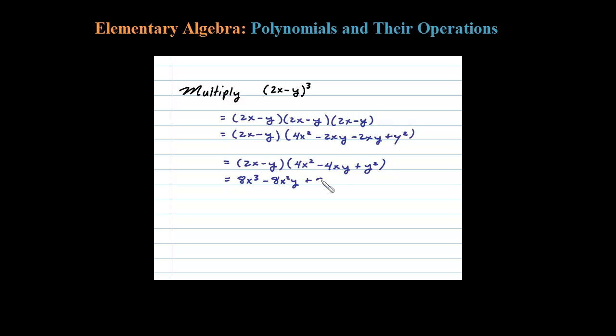Now we have to distribute the negative y. Negative y times 4x squared is minus 4x squared y, negative y times that middle term plus 4xy squared, and then finally negative y times y squared is minus y to the third.